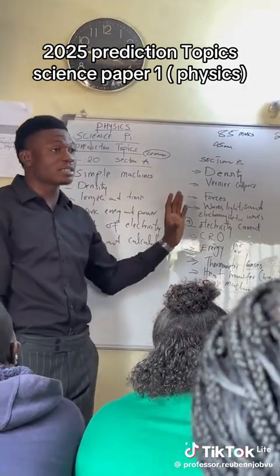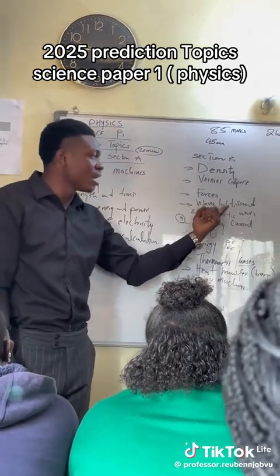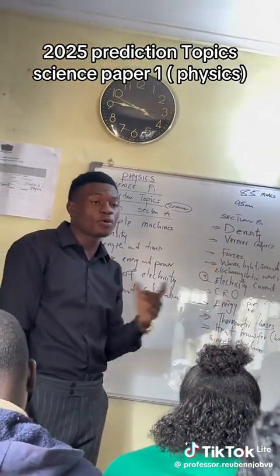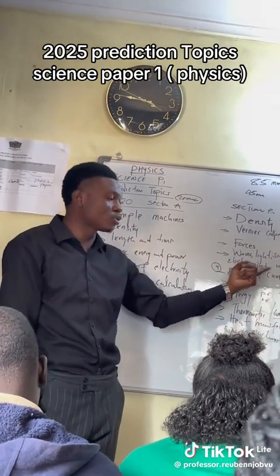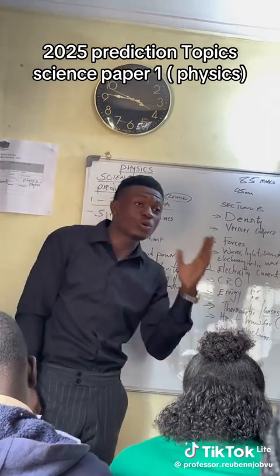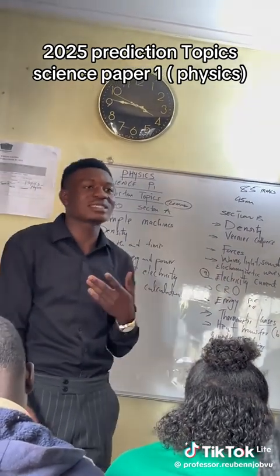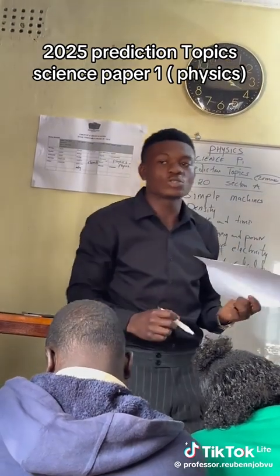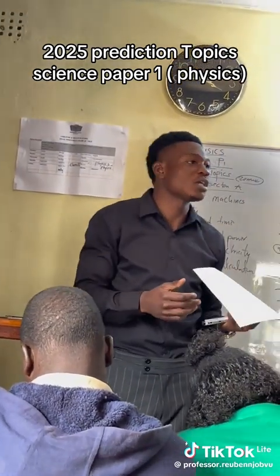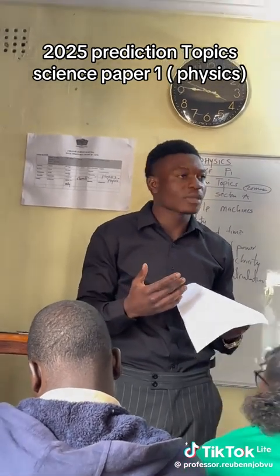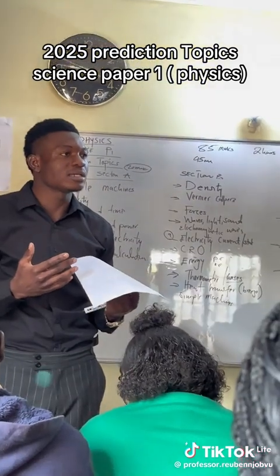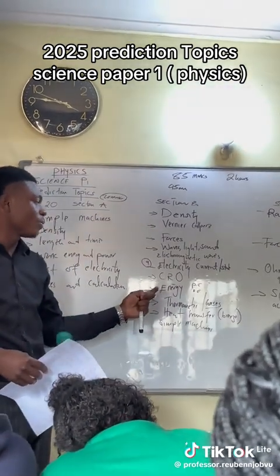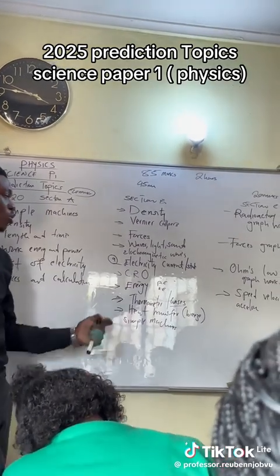In Section B, the first question could be on density using calipers, or forces. Section B covers forces, waves, light and sound. For waves, remember the electromagnetic spectrum: radio, micro, infrared, visible, ultraviolet, X-ray, gamma — their properties will come here. For electricity, we have static electricity and current electricity. Static electricity includes the law of electrostatics: like charges repel, unlike charges attract. There's also the cathode ray oscilloscope.